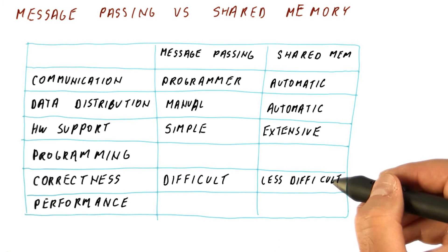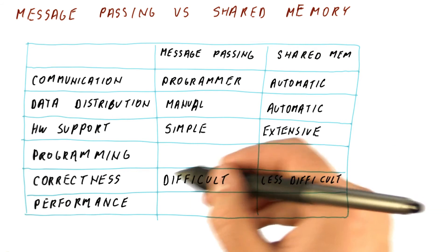In shared memory, correctness is also not easy to get, but it's less difficult than with message passing.